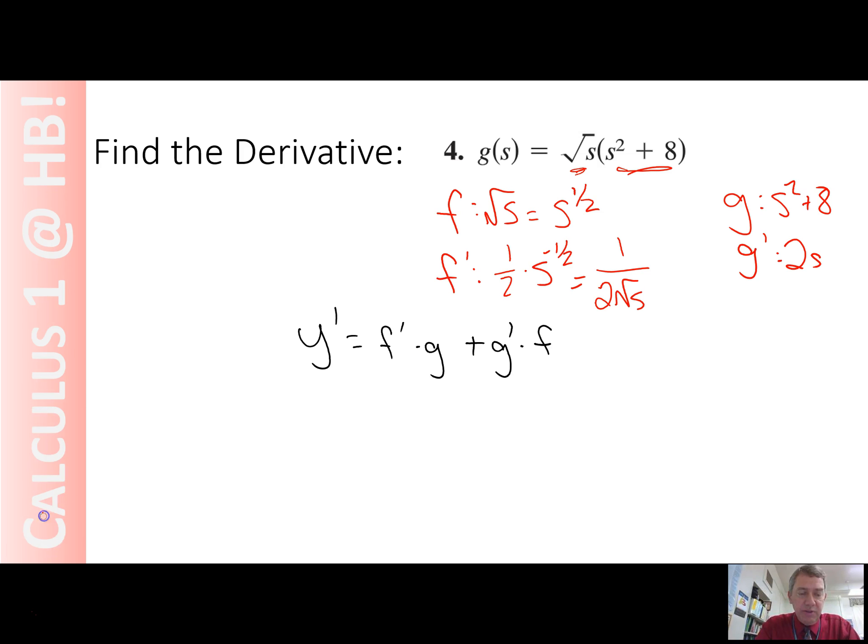That should give us 1 over 2 square root of s times s squared plus 8 plus g prime times f, which is 2s, times f, which is the square root of s. And there we go.